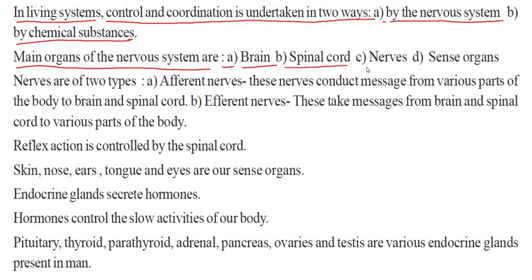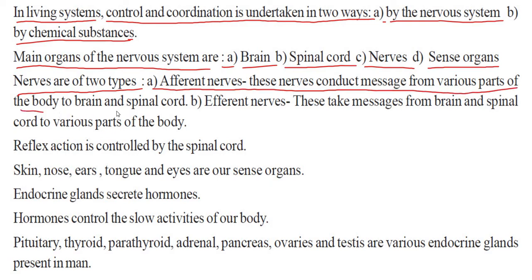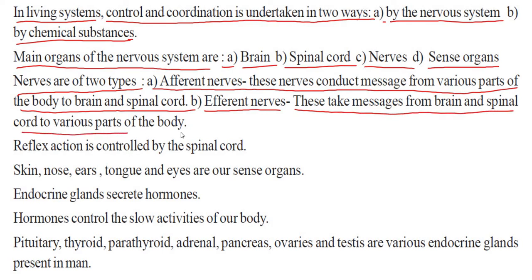Main organs of the nervous system are: number one, brain; number two, spinal cord; number three, nerves; number four, sense organs. Nerves are of two types: afferent nerves, which conduct messages from various parts of the body to the brain and spinal cord; and efferent nerves, which take messages from the brain and spinal cord to various parts of the body. Reflex action is controlled by the spinal cord. Skin, nose, ears, tongue, and eyes are our sense organs.